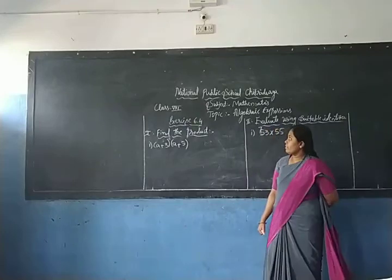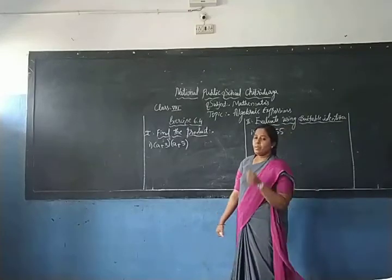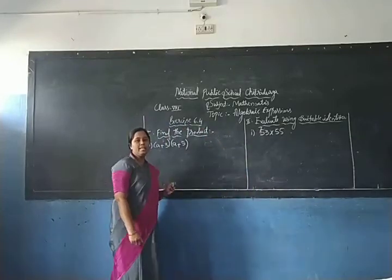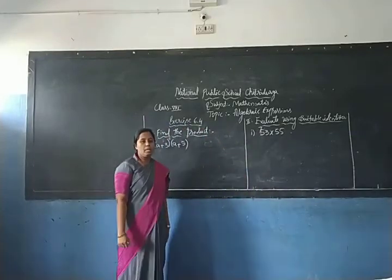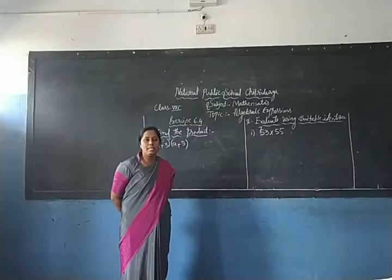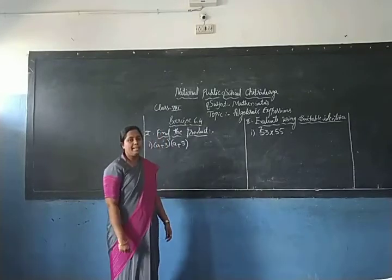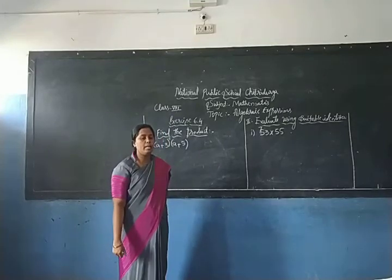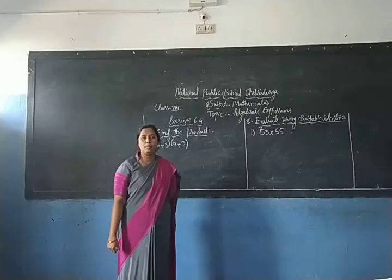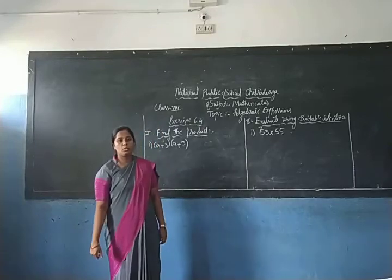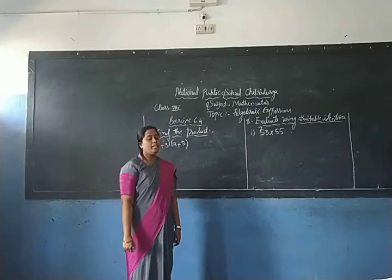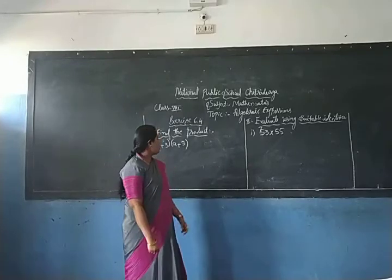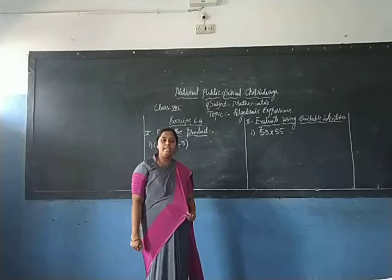Welcome back to the online class of Class 8. In the previous session, we discussed the special products: (x+a)(x+b) = x² + x(a+b) + ab, and the standard identities: (a+b)² = a² + 2ab + b², (a-b)² = a² - 2ab + b², and (a+b)(a-b) = a² - b².